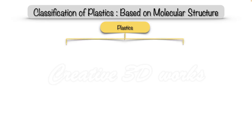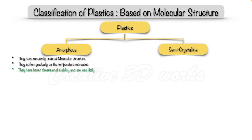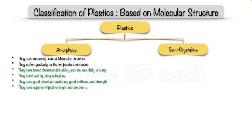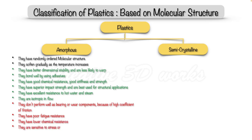Now let's see the classification of plastic based on molecular structure. Plastic is divided into amorphous and semi-crystalline. Amorphous plastics have a randomly ordered molecular structure. They soften gradually as temperature increases and have better dimensional stability, being less likely to warp. They bond well using adhesives and have good chemical resistance, stiffness, and strength. They have superior impact strength and are best used for structural applications. They have excellent resistance to hot water and steam and are isotropic in flow. However, they don't perform well as bearing or wear components due to their high coefficient of friction, have poor fatigue resistance, lower chemical resistance, and are sensitive to stress cracking. For example: PC, ABS, acrylic, PVC.